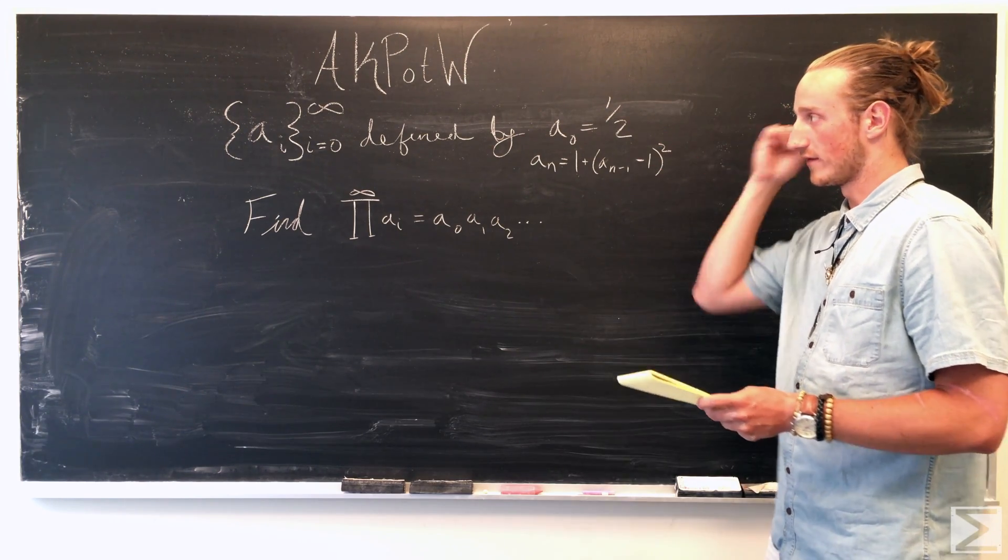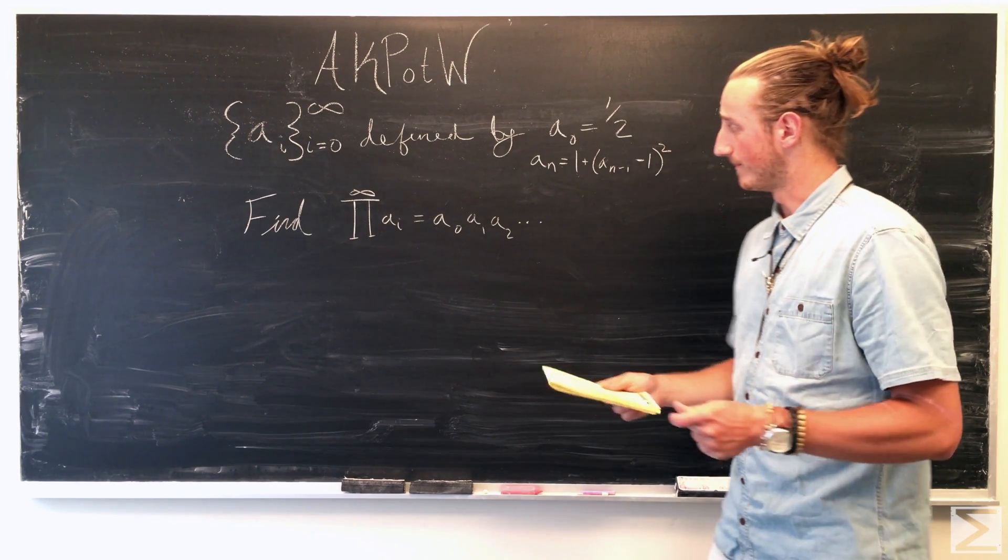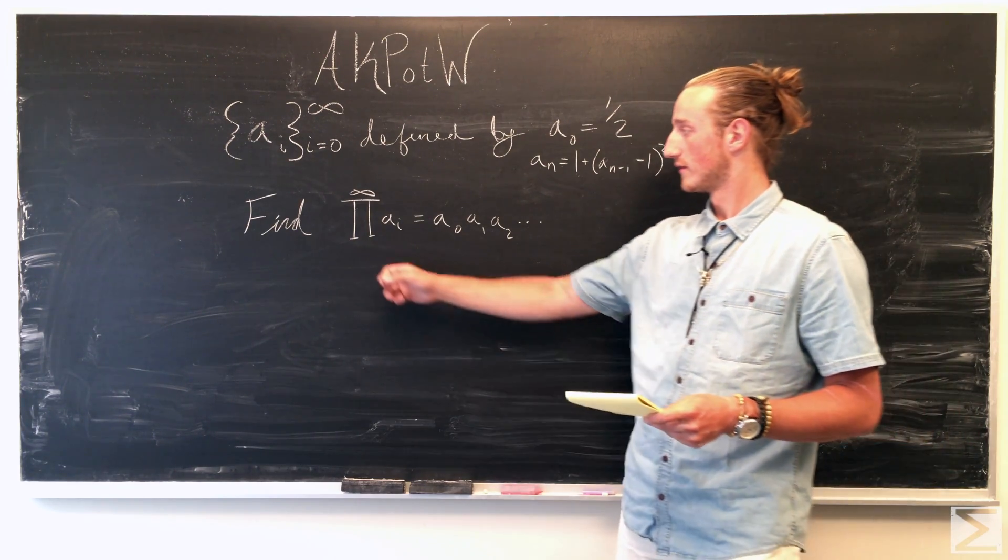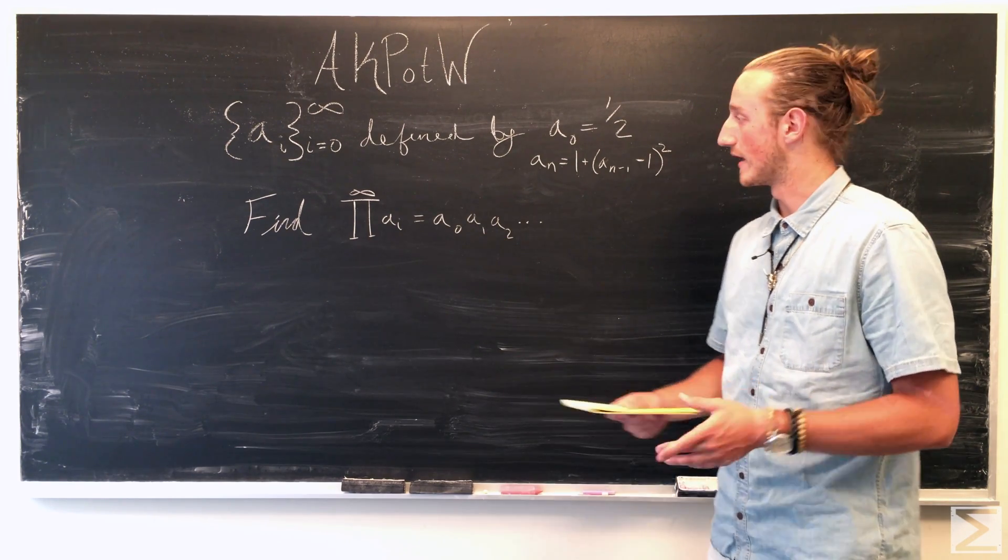And so these are going to be the values of a, and we're asked to find the product, the infinite product of a i, which is just a zero times a one times a two, all the way to a n.